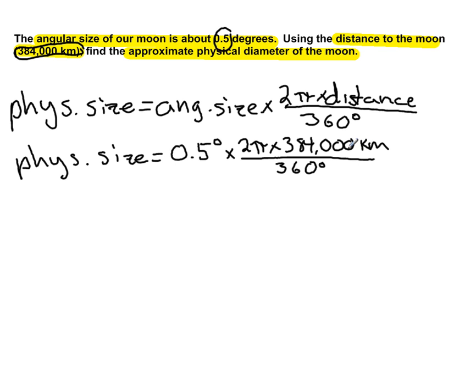So as long as the physical size of the moon is okay in kilometers, then we're all set, and I think kilometers is a perfectly good unit. Let's start calculating this out. I'm going to leave the 0.5 alone and tackle the fraction to start with: 2π times 384,000.